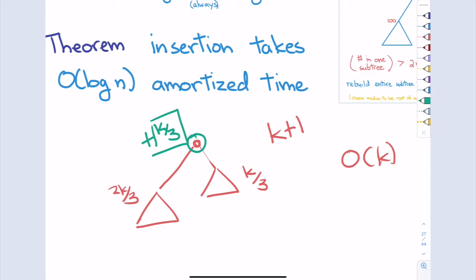By the time I get to a stage where some node is very imbalanced, I want to argue I have a lot of credits that can pay for something proportional to k. Once upon a time this subtree was completely balanced from some rebuild, or was a brand new node — an empty tree. That subtree used to be balanced. It gradually became unbalanced, but it also picked up some credits along the way.